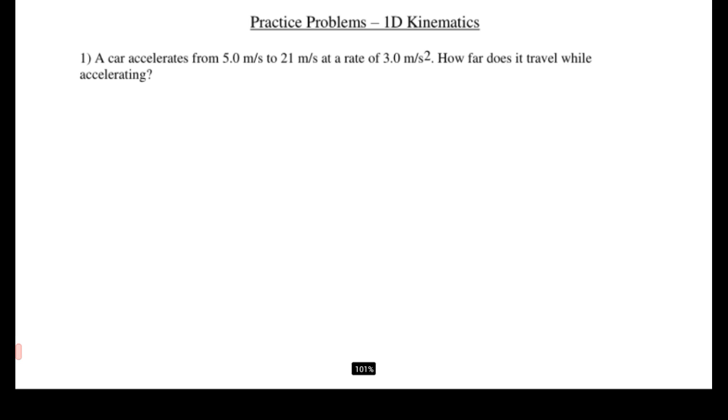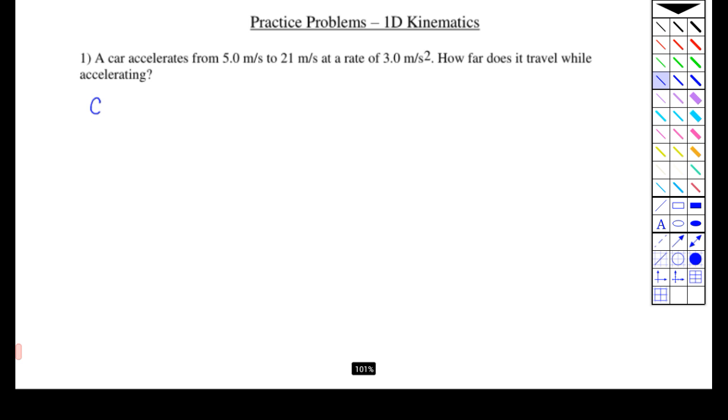So the first thing we should probably do is write down all the information we're given. So we're given the following, we're given the acceleration, and I'm going to assume the car is traveling in one dimension, so let's just say it's going in the x direction. The magnitude of the acceleration is 3 meters per second squared. Our initial velocity is 5 meters per second, and our final velocity is 21 meters per second.